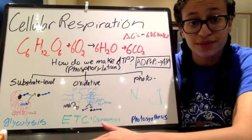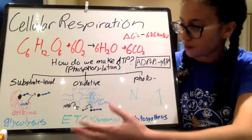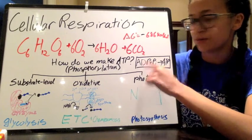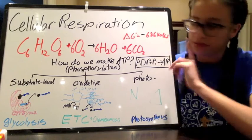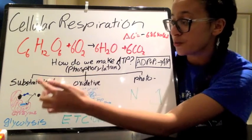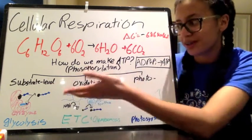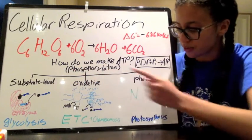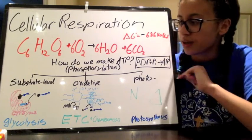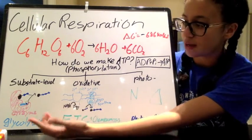So there are three ways we can make ATP. When you're making ATP you take ADP, two phosphates, and you add a phosphate group and you get ATP triphosphate. So you can either do substrate level, or we call that phosphorylation, which you can do substrate level phosphorylation, oxidative phosphorylation, or photophosphorylation.